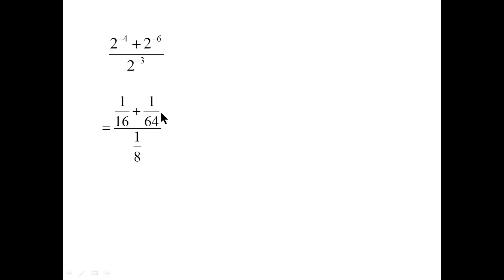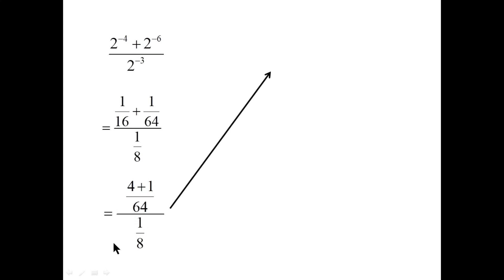Within this big fraction we have to add fractions in the numerator. The common denominator is 64 — since 64 is four times 16, multiply top and bottom of one-sixteenth by four to get four over 64. Four plus one is five over 64. Dividing by a fraction: flip the divisor and multiply. One over eight becomes eight over one, so we have five over 64 times eight over one. The 64 and 8 reduce, giving the final answer.